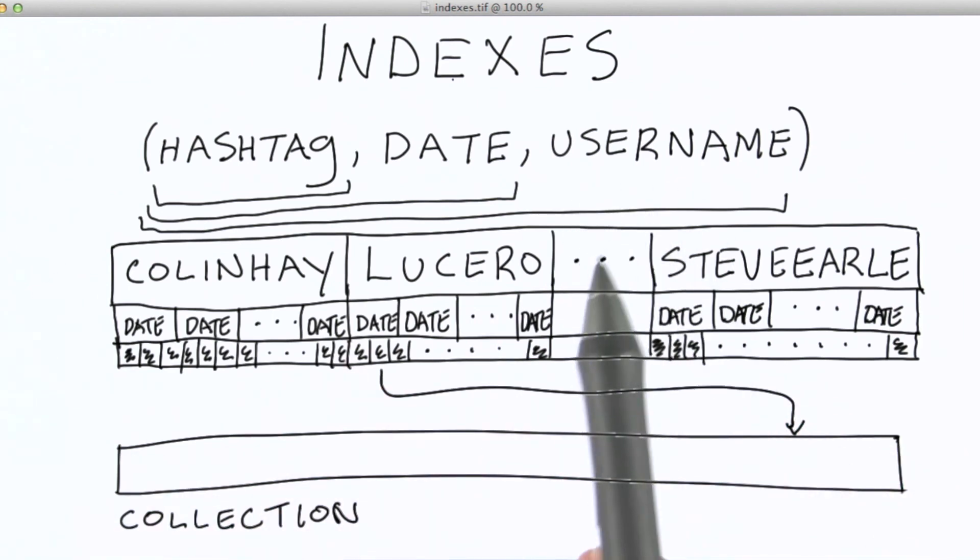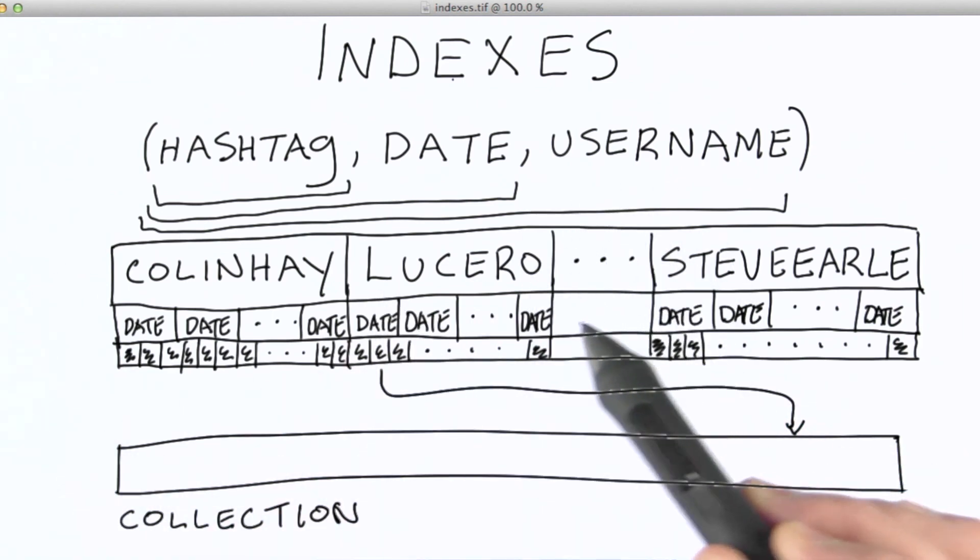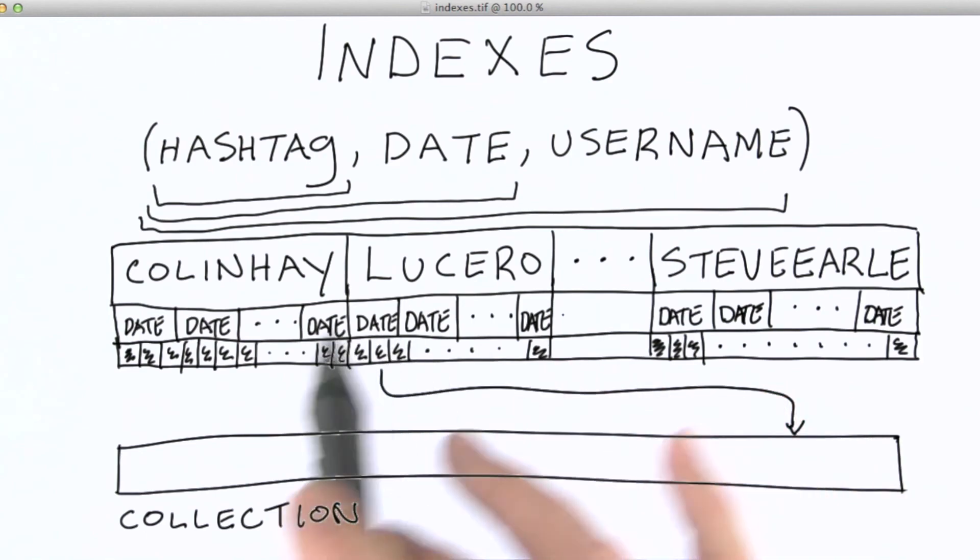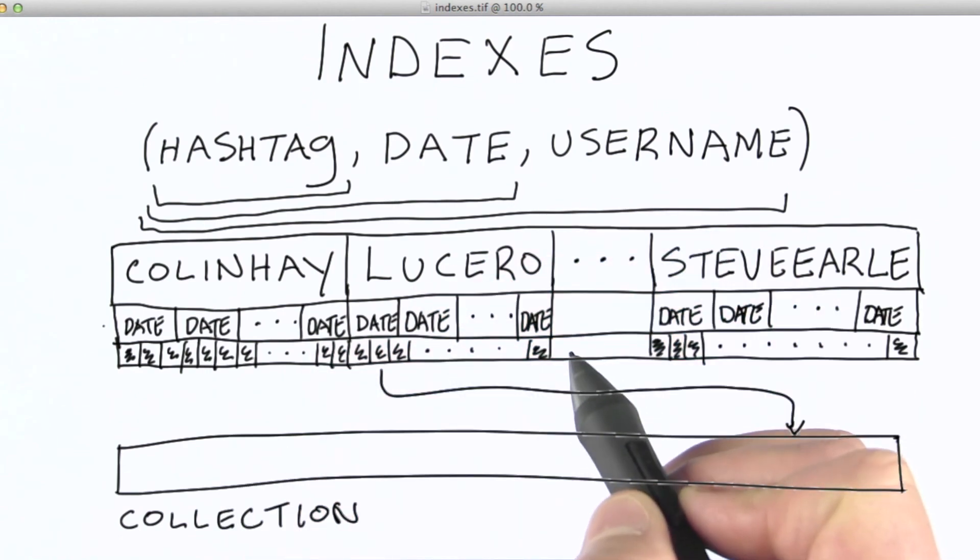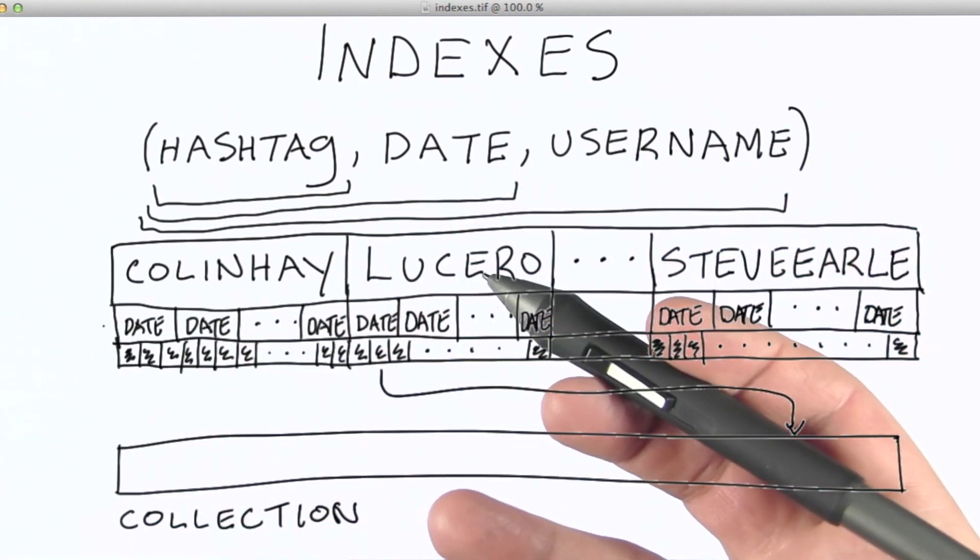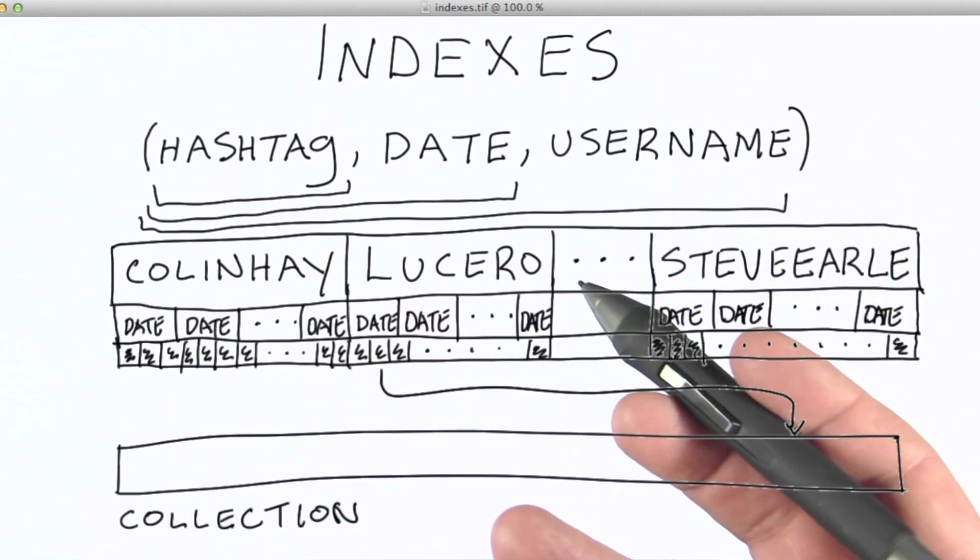Now, one other point I want to make is that every time you want to insert something into the database, this index would need to be updated. And that updating is going to take some time. So, we use indexes to make reads faster, but writes become a little bit slower if you have an index, because the index needs to be updated. So you need to take that into consideration when you're thinking about what indexes you might want for your particular application.